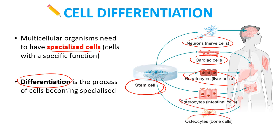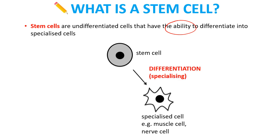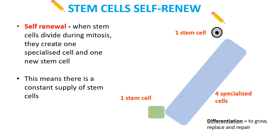Stem cells are undifferentiated cells — they're not committed to being a particular type of cell like a skin cell, but they have the ability to differentiate into other specialized cells. It's a one-way process: once a stem cell has differentiated and become a specialized cell, they can't go back. A stem cell receives chemical signals from itself or other cells and differentiates into a particular type of cell like a muscle or nerve cell.